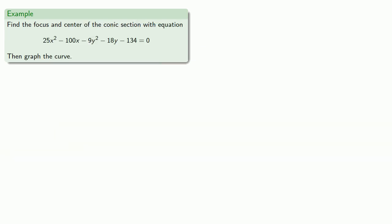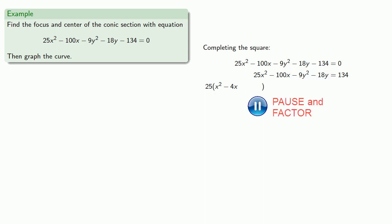Let's try another one. It's convenient to factor out the coefficient of our x² and our y². So factoring 25 from our x² and x terms, we'll need to be a little more careful here. We want to factor a negative 9 from our y² and y terms. We'll complete the square.